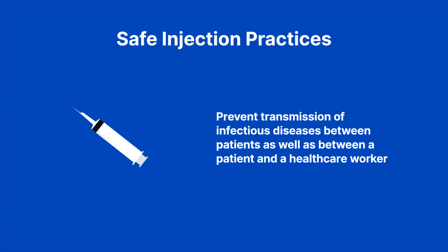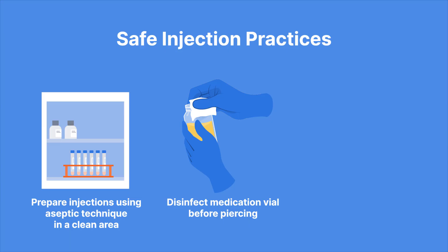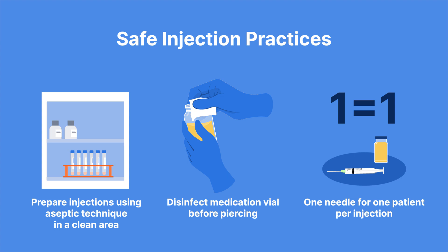Safe injection practices are intended to prevent transmission of infectious diseases between patients as well as between a patient and a healthcare worker. These practices include preparing injections using aseptic technique in a clean area, disinfecting the rubber septum of a medication vial with alcohol before piercing, and using one needle for one patient per injection, including manufactured pre-filled syringes or insulin pens and single-dose vials. Needles should never be used for more than one patient, and the same needle should not be reused on the same patient for multiple entries into vials or IV systems, as this could introduce contamination.